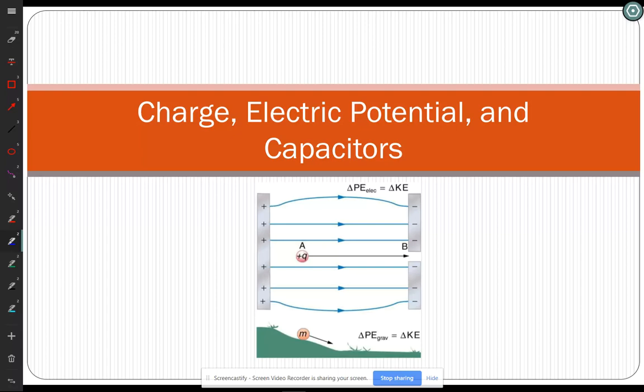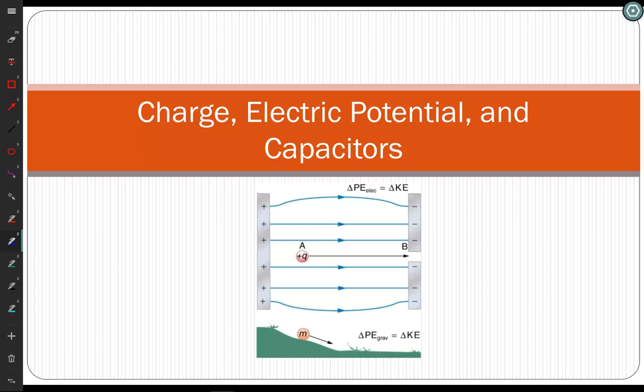First, looking at this figure, it has two pieces put together. One is showing two plates that we call a capacitor — two parallel plates is your classic capacitor. You have a positive charge on one plate and a negative charge on the other. If I put a positive charge between those plates, it's going to be repelled by positive and attracted by negative, because opposites attract and likes repel.